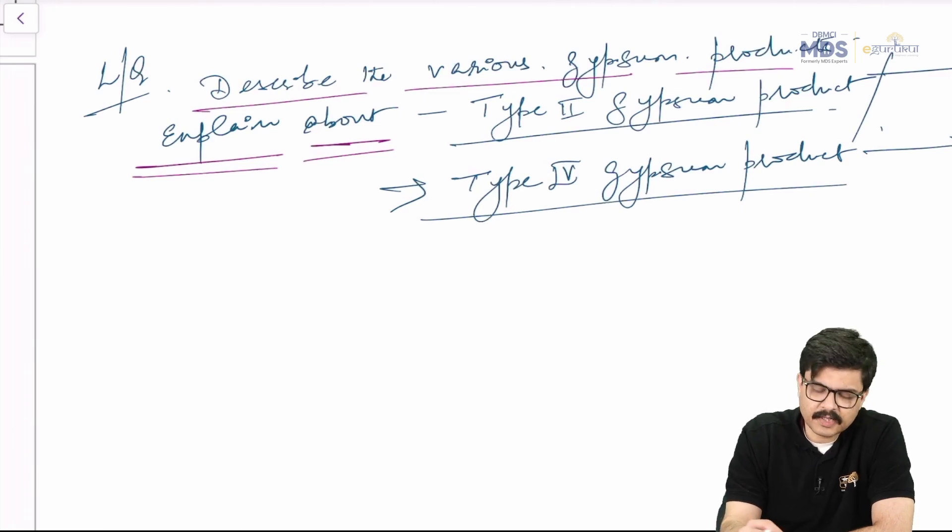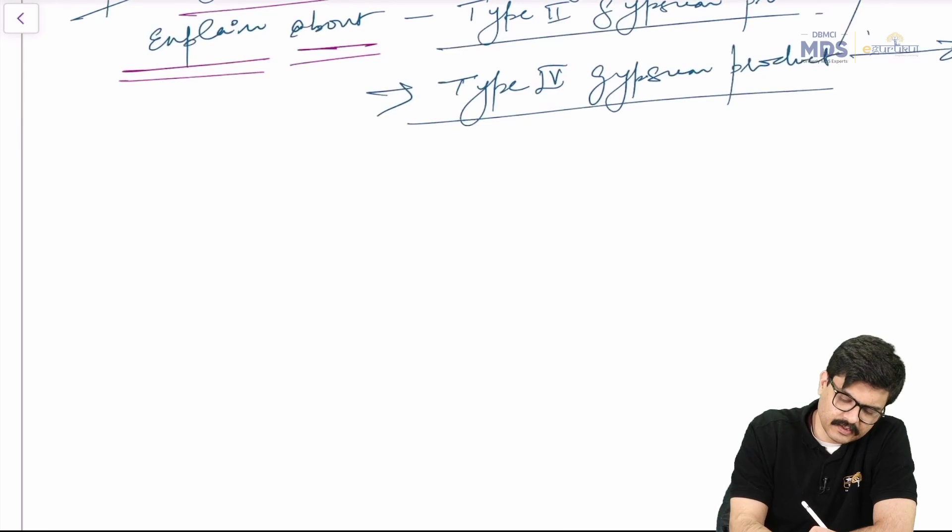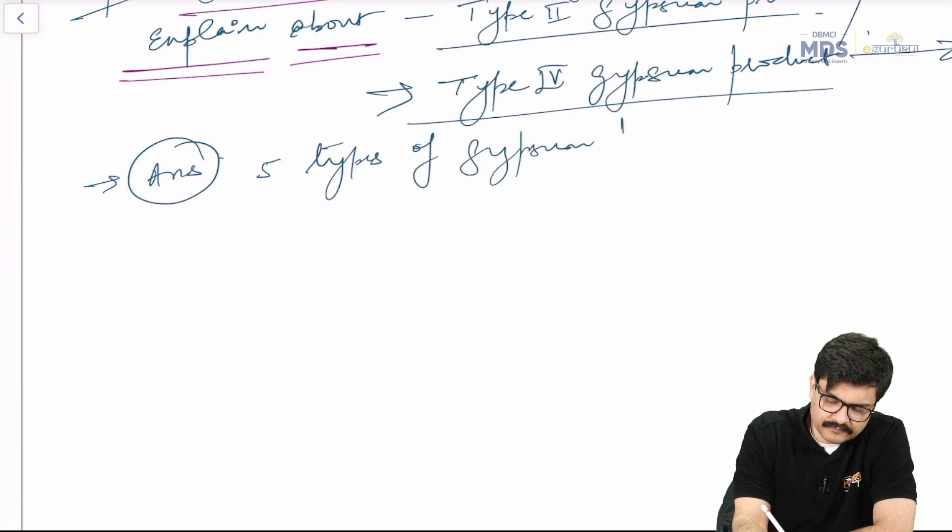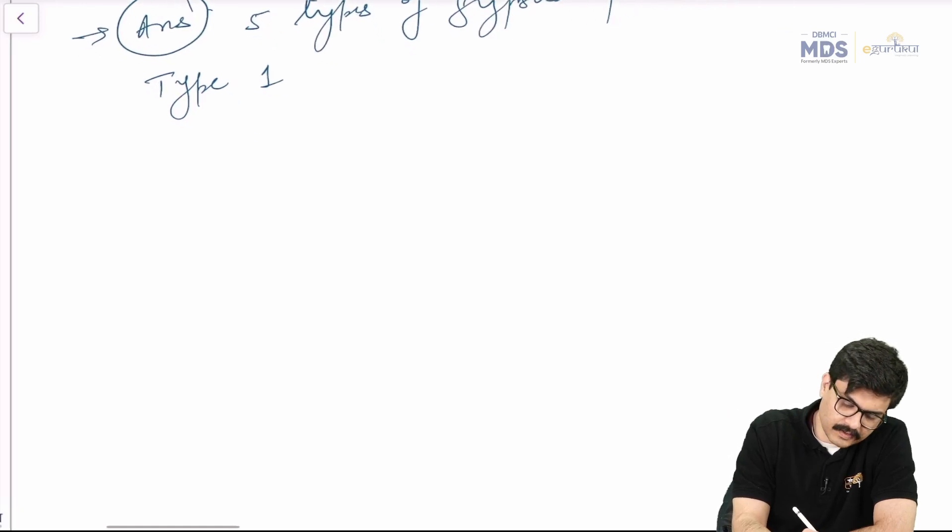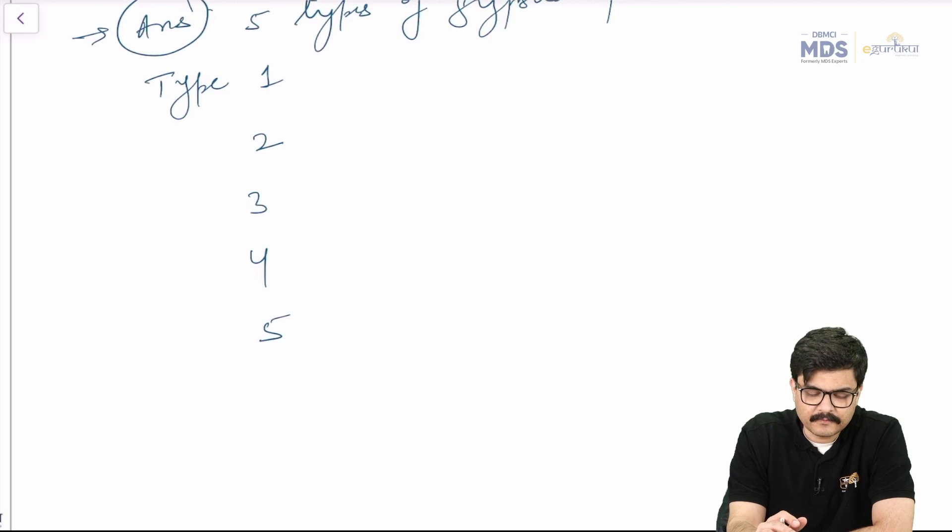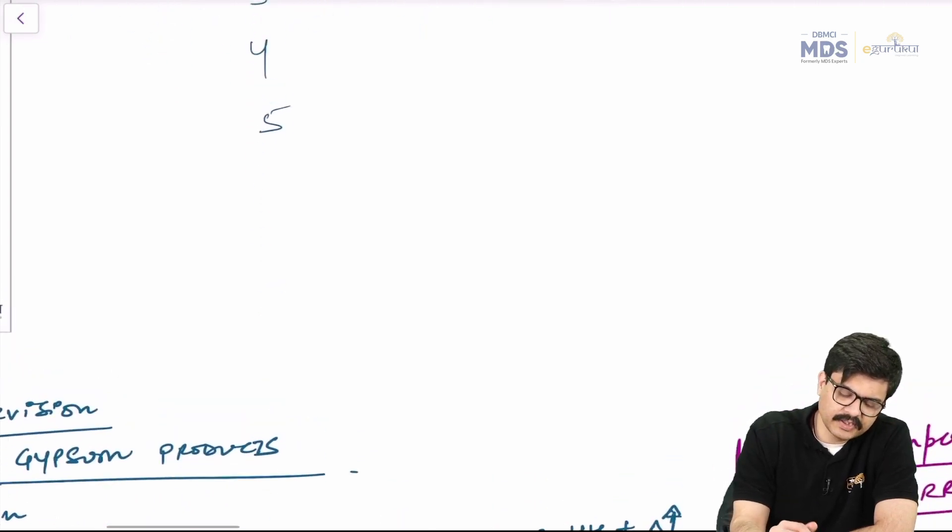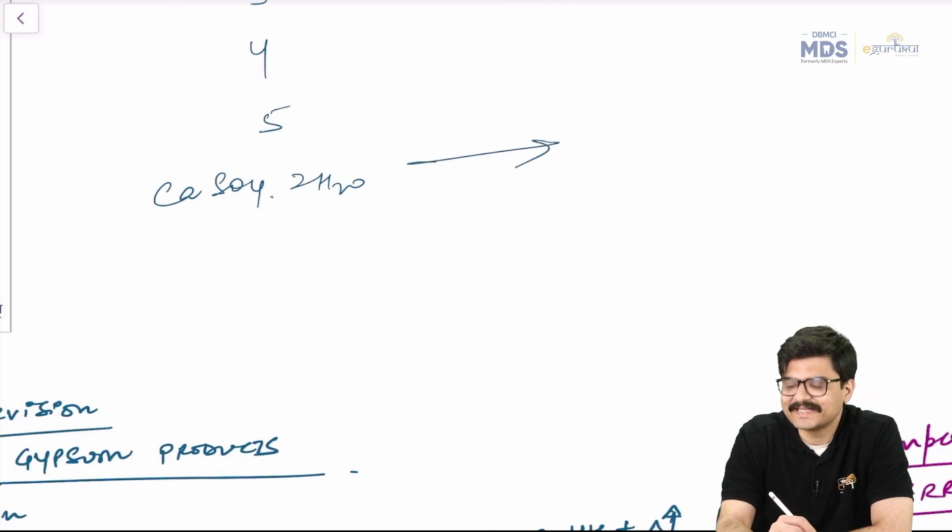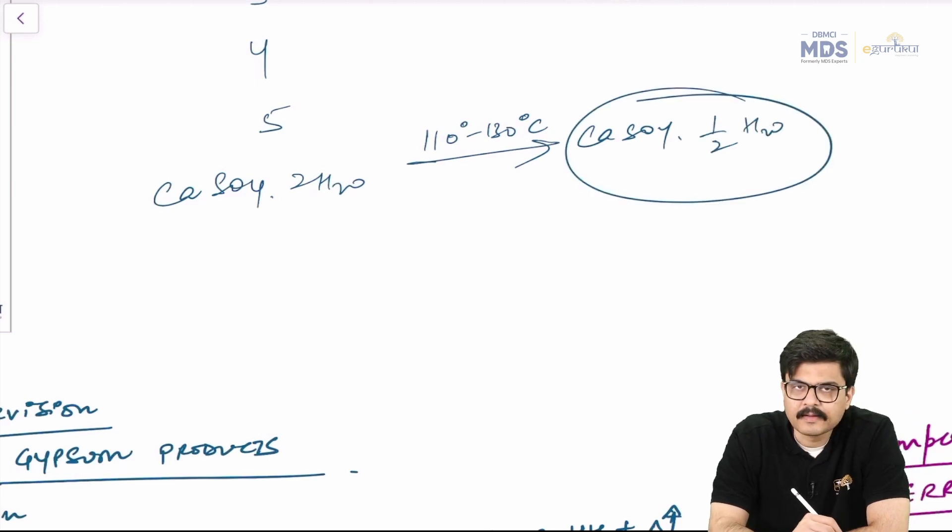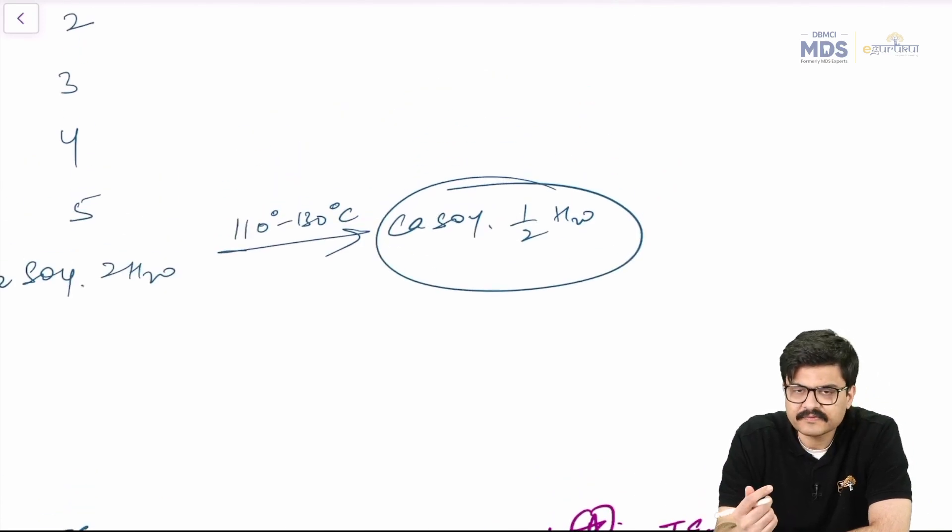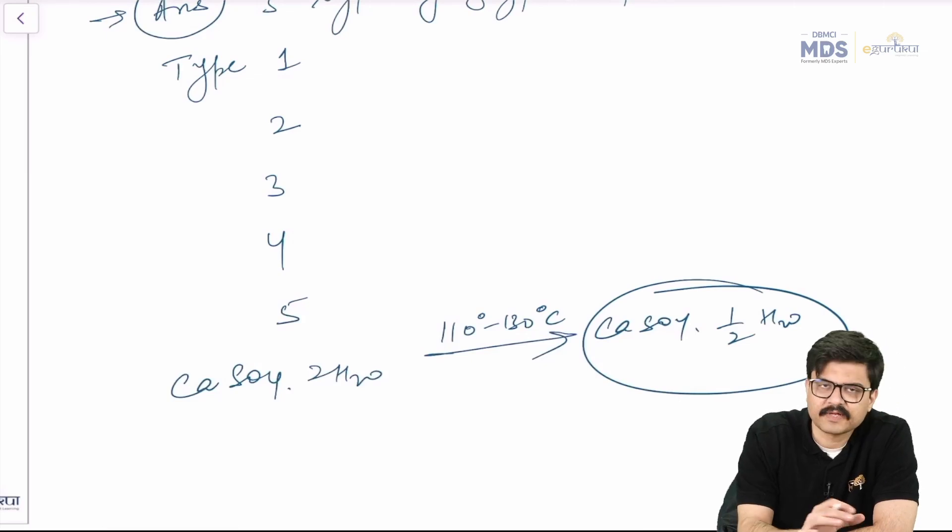So when you say the various types of gypsum products, you start with the fact that we have five types of gypsum products. So we have type 1, we have type 2, type 3, type 4, and type 5. Then you write down the reaction, how from the starting point, that is calcium sulfate dihydrate, you heat it to a particular temperature. That is under 110 to 130 degrees Celsius. And then you basically obtain your calcium sulfate hemihydrate. And these are further, based on their surface texture and morphology, they are further divided into these five types, 1, 2, 3, 4, 5.